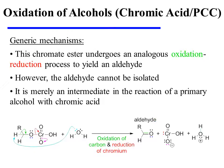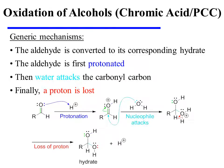However, the aldehyde cannot be isolated. It is merely an intermediate in the reaction of a primary alcohol with chromic acid. Under these conditions, the aldehyde will be converted to its corresponding hydrate. This occurs first through protonation of the aldehyde oxygen.